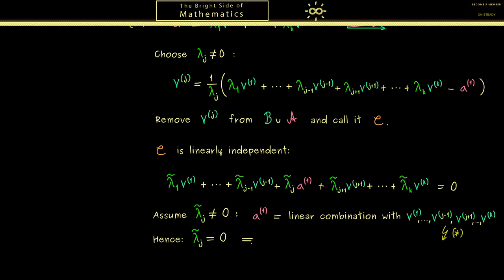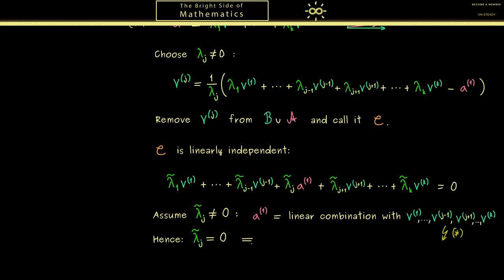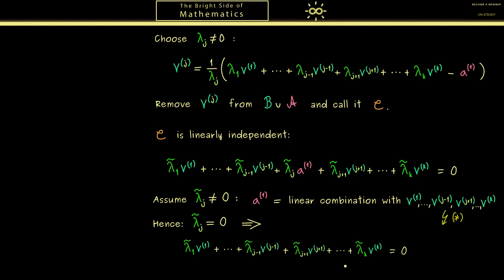Hence, we conclude that this coefficient for a^1 is zero. Moreover, this then implies that the linear combination from above is much simpler. So you see, now only the v vectors are involved here. However, for them we already know that they are linearly independent. So in conclusion, we have that all the coefficients have to be zero. And in summary, this means that our set C is also linearly independent.